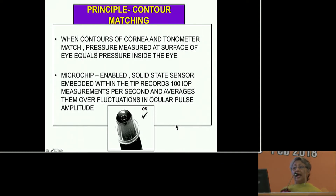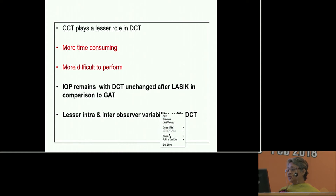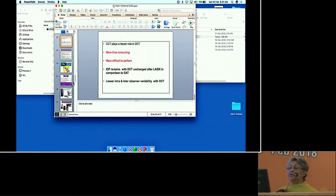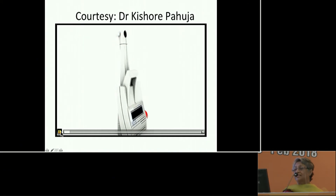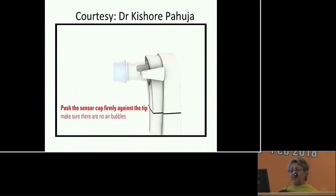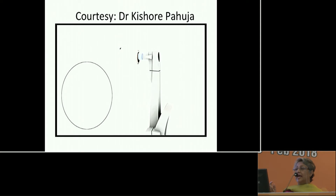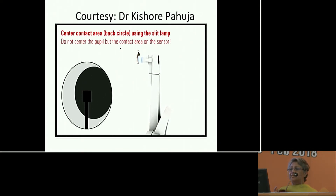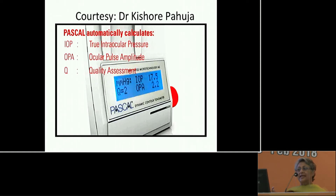When the contours of both the cornea and the tonometer match, the pressure is measured at the surface of the eye. The Pascal tonometer is used on a slit lamp — you push the cap firmly against the tip, turn the Pascal on, allow the tonometer to go across, and see the contact area shown by a black circle. You don't center on the pupil; the contact area is on the sensor. It gives an audio cue if placement is incorrect. You move the lever arm slightly ahead and after a few seconds you get the actual intraocular pressure.